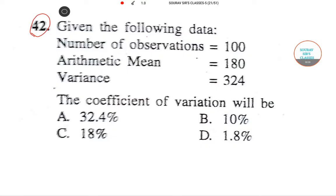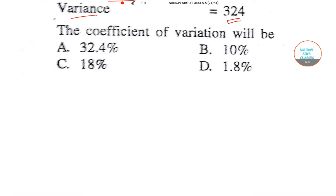Here is the question marked as 42. It provides us with some data. It says the number of observations is 100, arithmetic mean is 180, and the variance value is 324. We need to comment on the coefficient of variation.